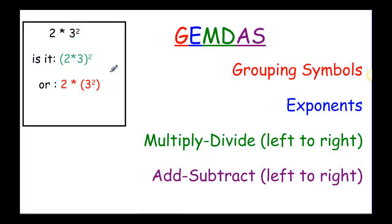This recording is going to talk about doing order of operations, or what we call GEMDAS. You might have heard it called PEMDAS, but I prefer GEMDAS because the G used to be P for PEMDAS, which was parentheses, but really it could be any kind of grouping symbol, so I like the G better.